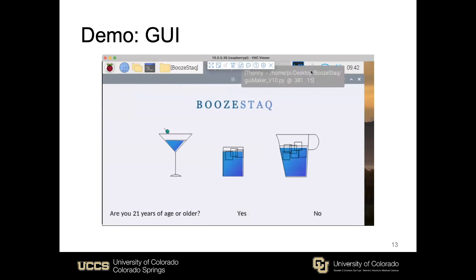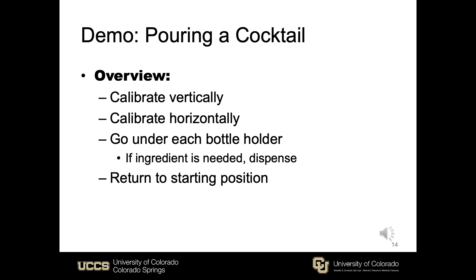Before showing the demonstration of BoozeStack in action, here's an overview of how the machine pours a cocktail. First it will calibrate vertically — the machine takes small steps down and stops to check the state of a switch, repeating until the switch is pressed, then goes up a certain distance into the dispense position. Then the machine calibrates horizontally, going left slowly until a push button is pressed. Next the machine goes underneath the first bottle holder and checks if that ingredient is needed — if so, it dispenses. It continues to each bottle holder, dispensing if needed or skipping if not.